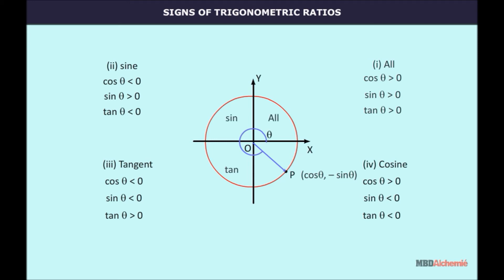Thus, all ratios are positive in the first quadrant; only sine theta is positive in the second quadrant; only tan theta is positive in the third quadrant; and only cos theta is positive in the fourth quadrant. Since trigonometric ratios are ratios of two quantities, the signs of their reciprocals remain the same. Therefore, cosec theta is positive in the second quadrant, cot theta is positive in the third quadrant, and sec theta is positive in the fourth quadrant.